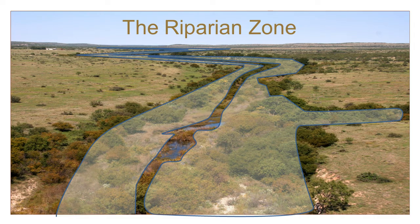This includes the stream bank, flood plain, plants, soils, and rocks that make up the ribbon of land that follows and interacts with the waterway. Areas adjoining lakes, reservoirs, and wetlands also are considered riparian, but this short course will focus mainly on rivers and streams.